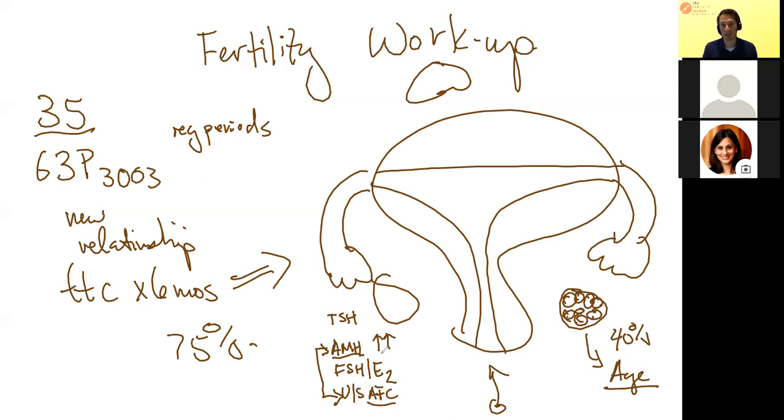The ultrasound antral follicle count is a visual representation of the AMH. We look at the ovary and literally count how many follicles there are. The more follicles there are, the more responsive the ovary is. You can see why these two tests tend to be concordant.